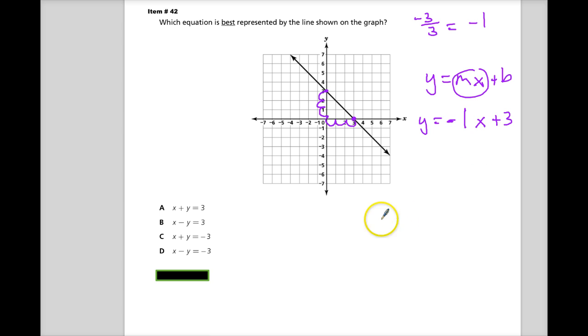What do I do with this? Well, now that I have it in slope-intercept form, I can just convert it into standard. I just need to move the X over here. To get rid of minus 1X, I need to add 1X. X plus Y equals 3.